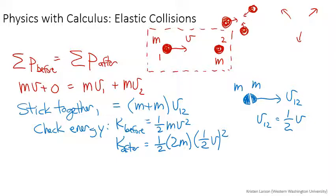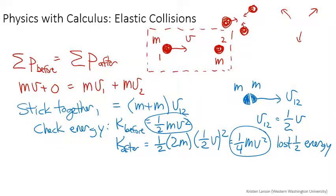When you do that problem out, the two and the one half cancel and you get one fourth mv squared. Check out what happened: you had one half mv squared to start with, and by the end you've lost half your energy. This particular problem is called completely inelastic.